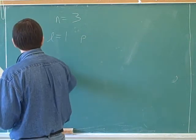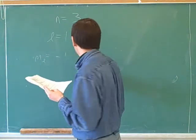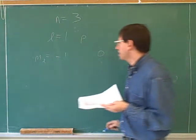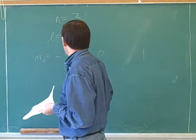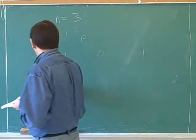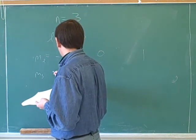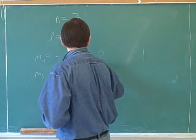Okay. Now what are the possible values of m sub l in this case? Minus 1, 0, 1. That makes sense so far. Okay. And then if you have n equals 3, l equals 1, and ml equals negative 1, what are your possible values of ms? Negative 1. Negative 1 half or 1 half. And that's the same over here.